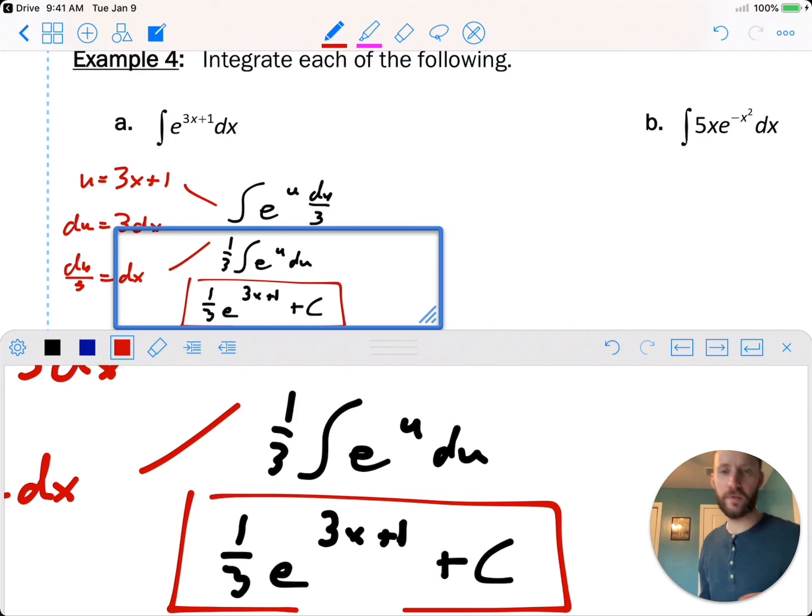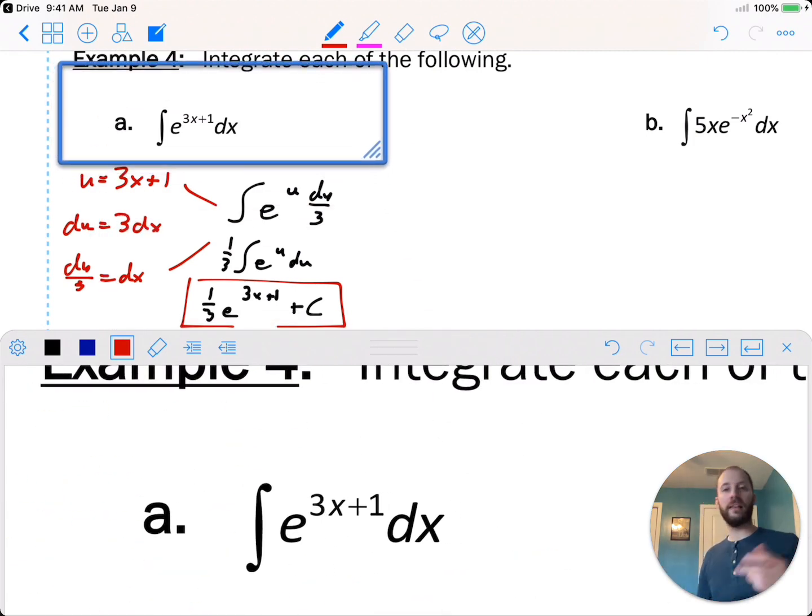So think to yourself, derivative of e to the 3x plus 1. Derivative of e is e, leaving the inside alone, times derivative of inside, times derivative of 3x plus 1, times 3. Then times 3 and the 1 third would cancel out, leaving you with the original problem.